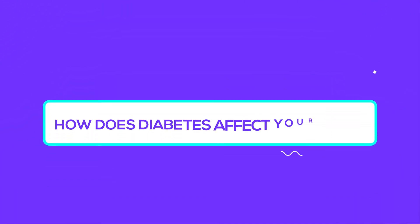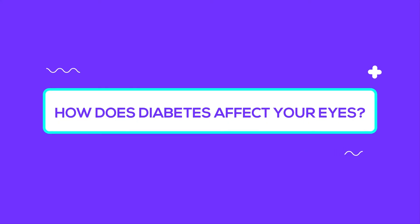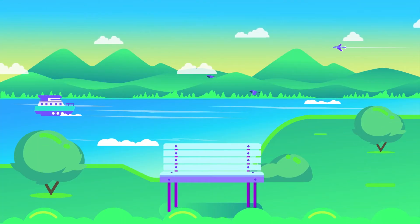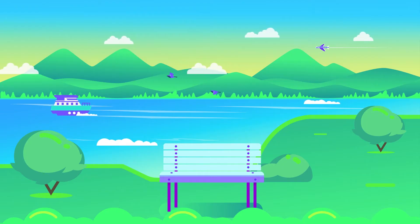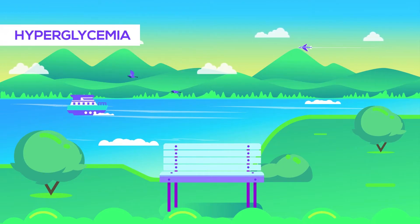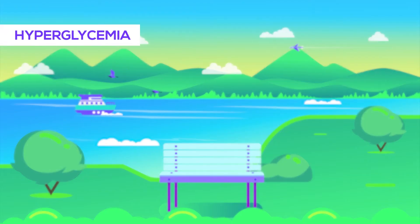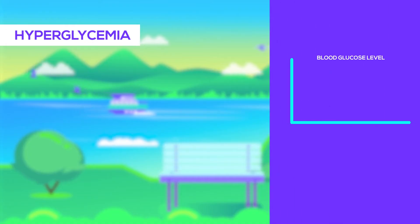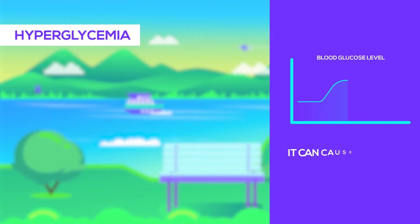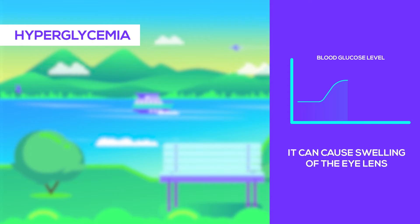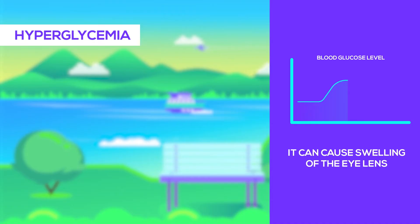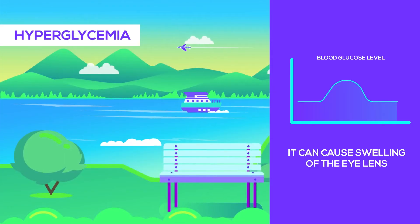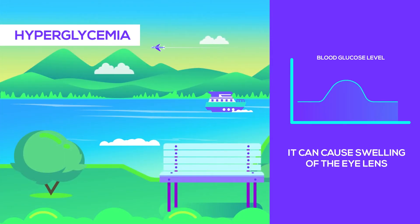How does diabetes affect your eyes? Diabetes affects the vision in many ways. Let's begin the discussion with the least serious condition: hyperglycemia-induced blurred vision. Hyperglycemia is when you have high levels of blood glucose. It can cause swelling of the eye lens, which ultimately leads to blurry vision. This is only a temporary condition and can easily be reversed by lowering the blood glucose levels back to desired levels.